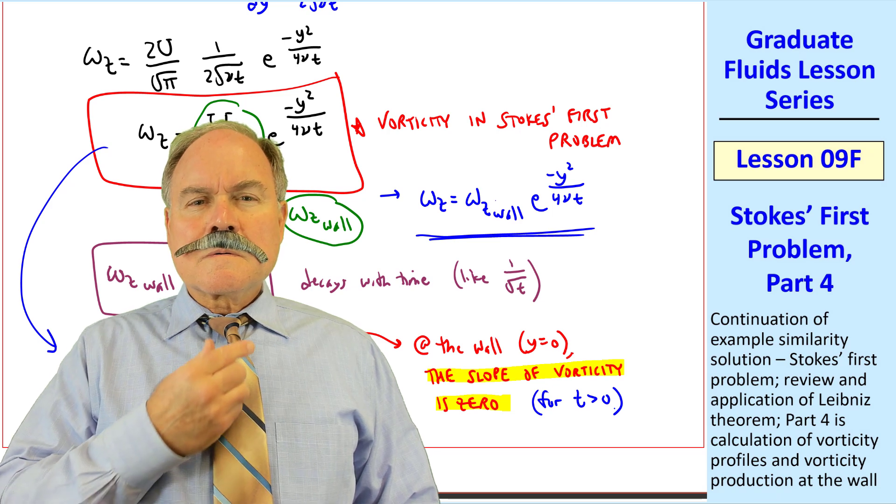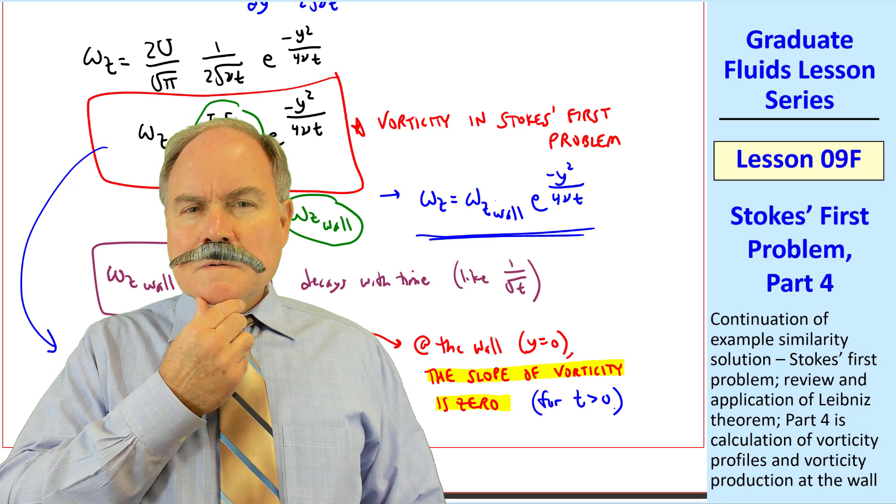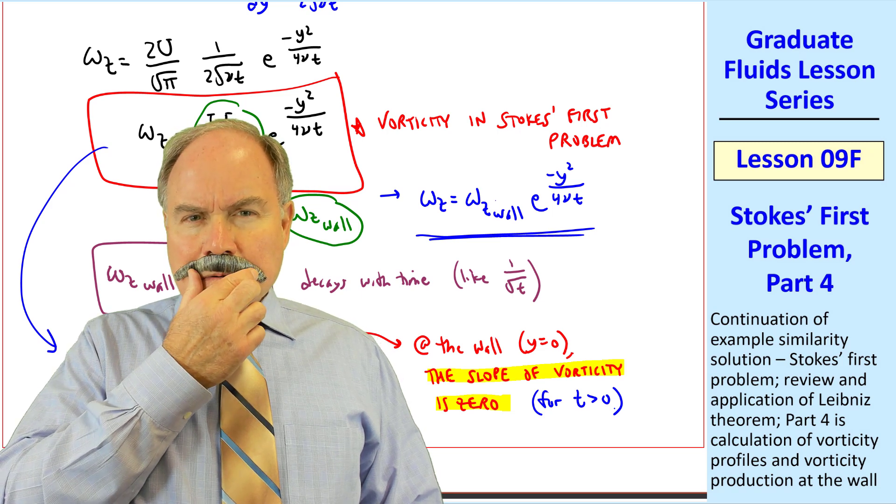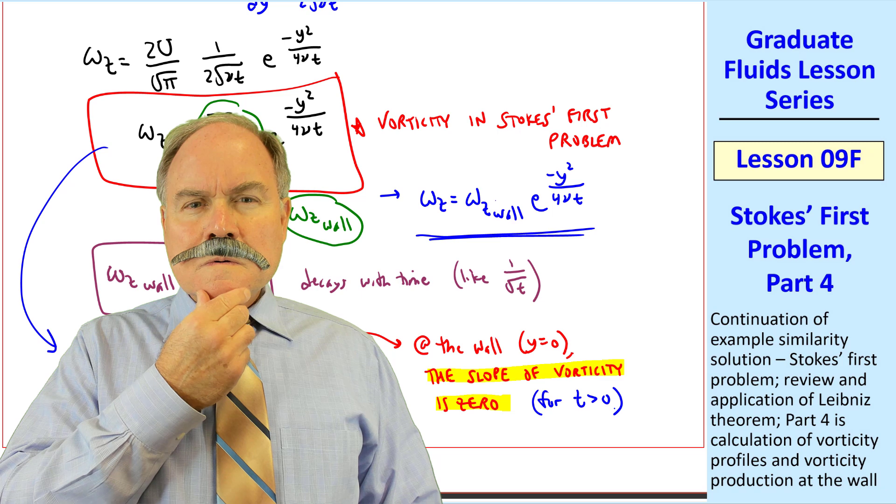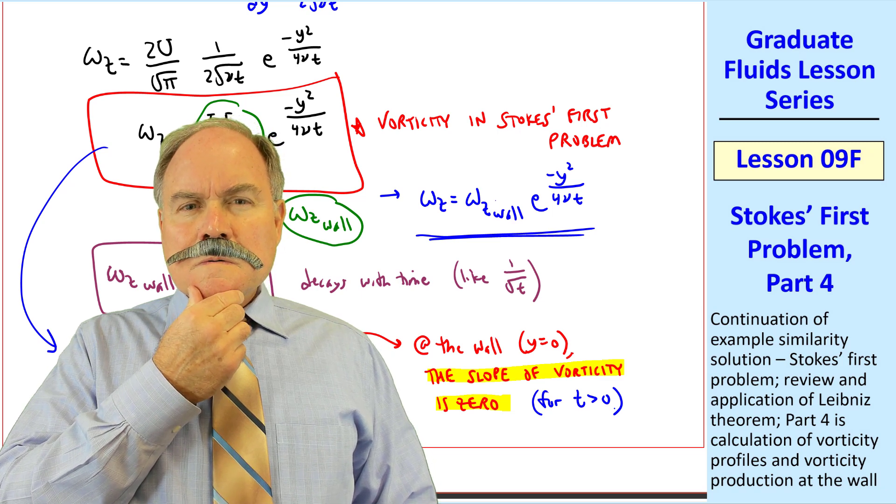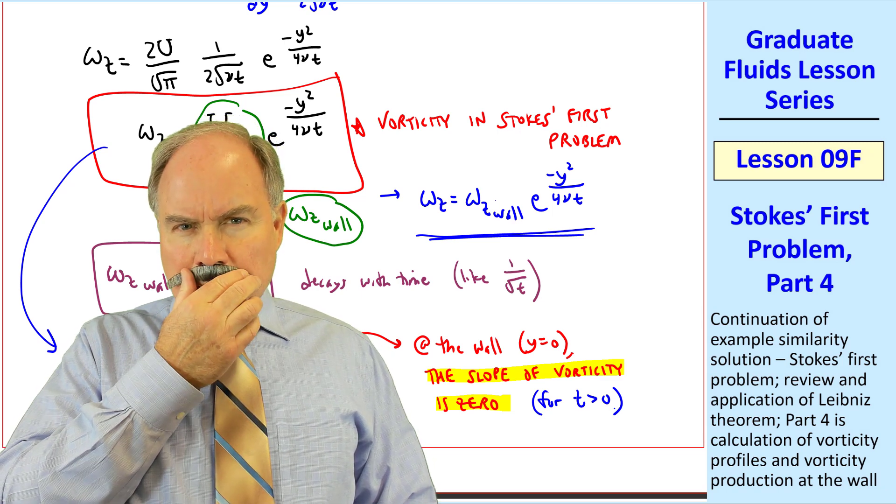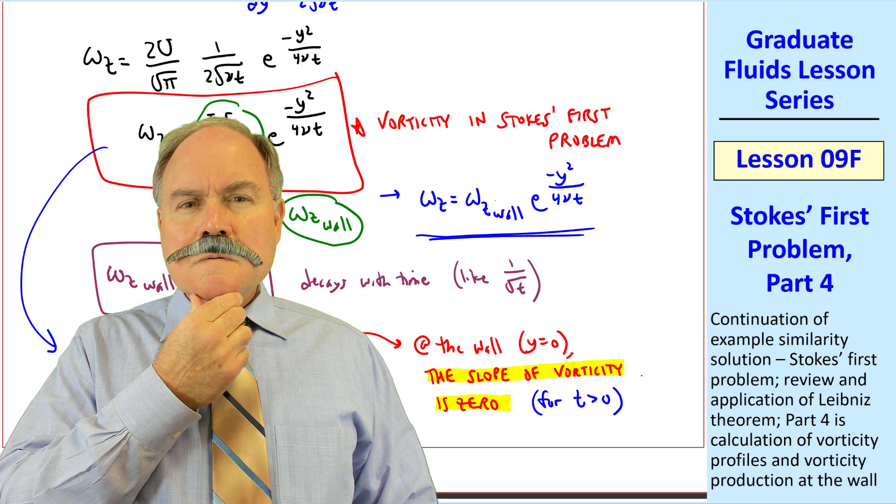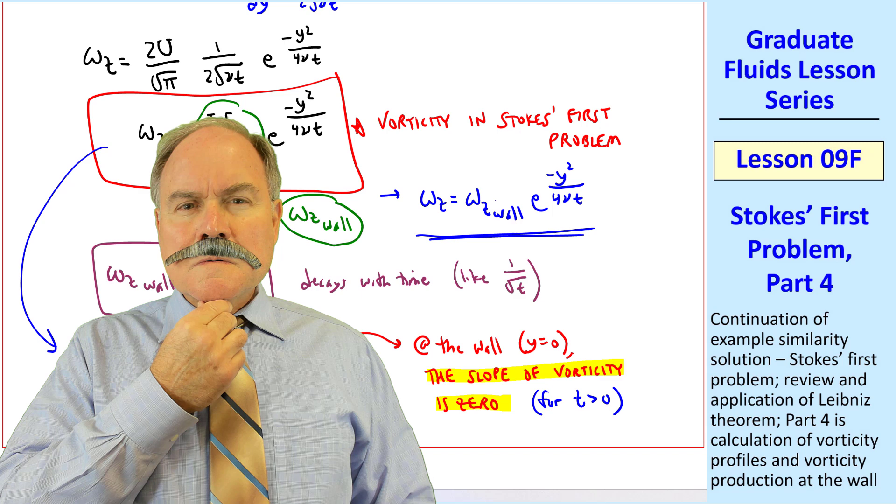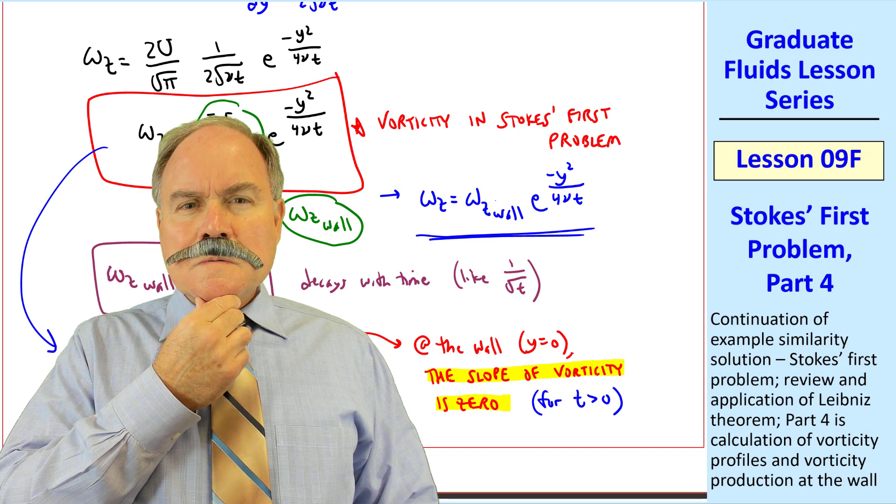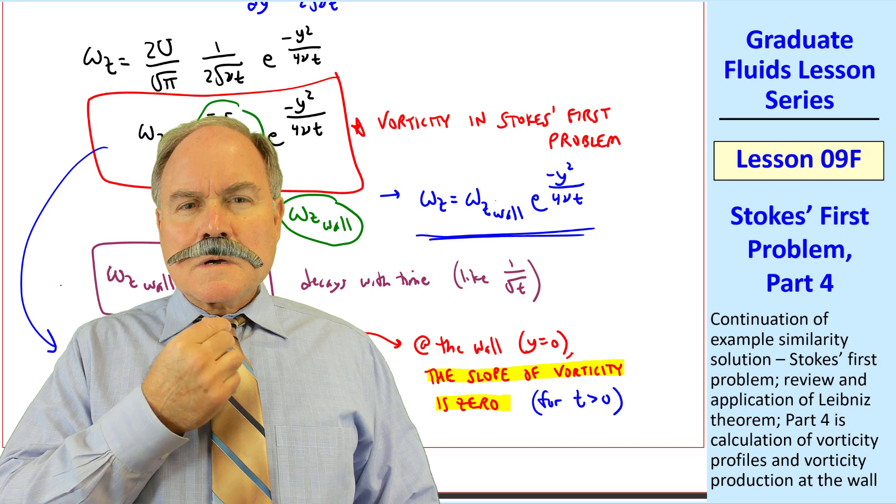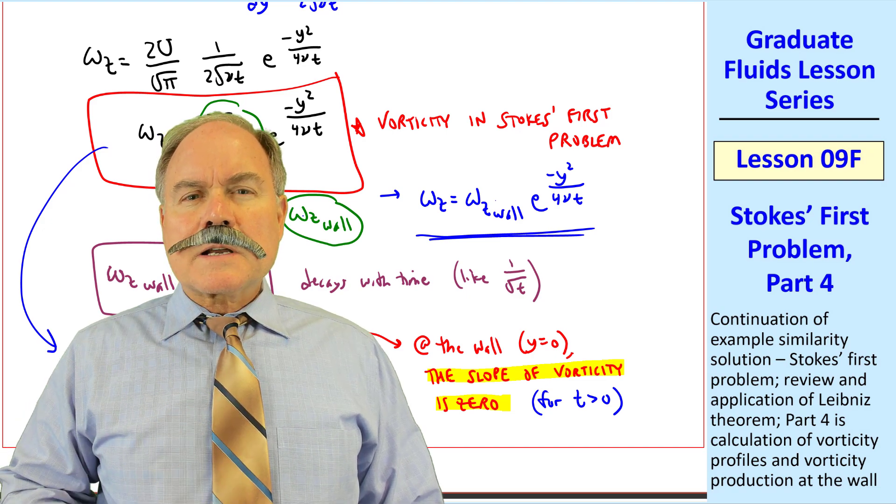It turns out that for any time greater than zero, you're correct. Del p del x is zero, and the vorticity gradient, normal to the wall, is also zero. Thus, vorticity is not being produced at the wall. But our previous discussion was limited to steady flows. This flow is unsteady. In fact, it has a sudden discontinuity at time zero. It turns out that unsteadiness is another way to produce vorticity at the wall. Thank you, sir. That explains it.